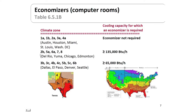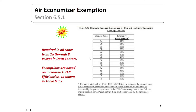Where it is required for computer rooms is in climate zones 2A, 5A, 6A, 7, and 8 if the system is over 135,000 BTUs per hour. Further north, it is required in those climate zones for systems that are 65,000 BTUs per hour or more — that's 5.5 tons of air conditioning. The exemptions are based on getting a better efficiency for the system itself. In climate zones 2A through 8, if the efficiency of your HVAC system is improved by the percentage shown for that climate zone, you would be exempt from the economizer requirement.